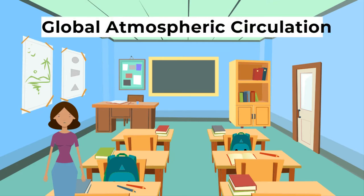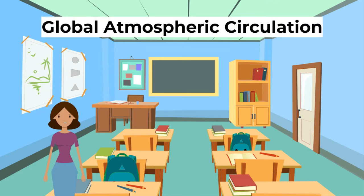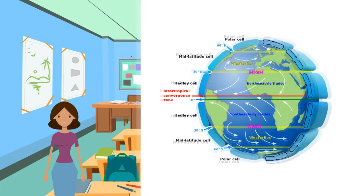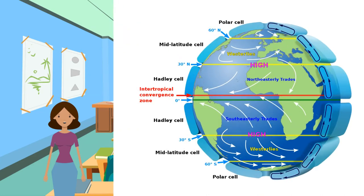Now let's talk about global atmospheric circulation. The way our atmosphere circulates around the earth impacts global weather and climate patterns, as the movement of air around the globe influences the temperature and humidity.